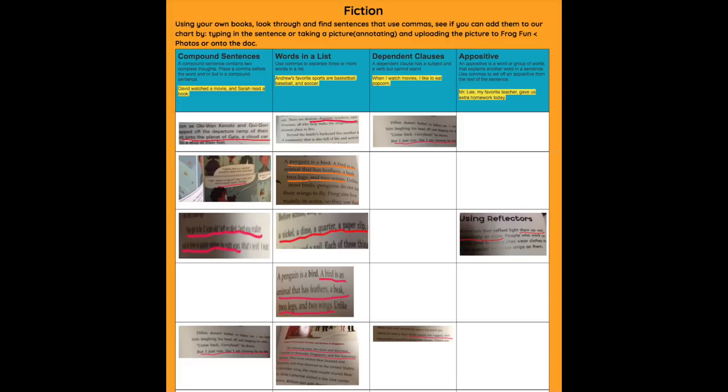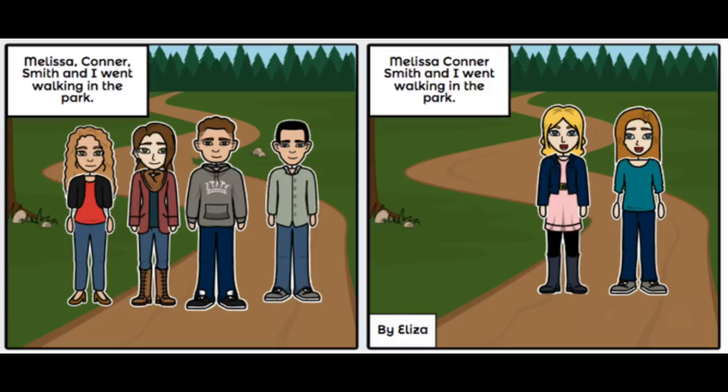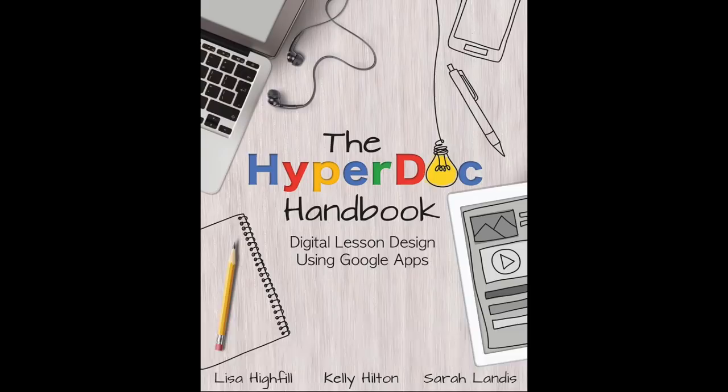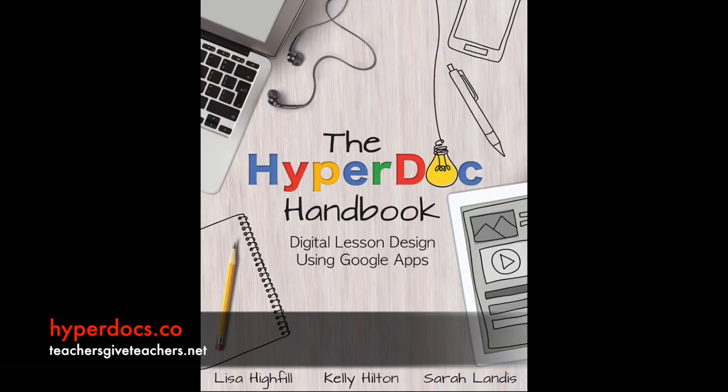For part three of the HyperDoc, students applied their knowledge of commas by using Storyboard That to create their own version of the book Eats, Shoots and Leaves, which inspired the entire lesson. You can find more information about HyperDoc lessons at hyperdocs.co or find the book on Amazon. Search the database of HyperDoc lessons created and shared by teachers at teachersgiveteachers.net, and on the HyperDocs Facebook group or on Twitter at TSGivetes.